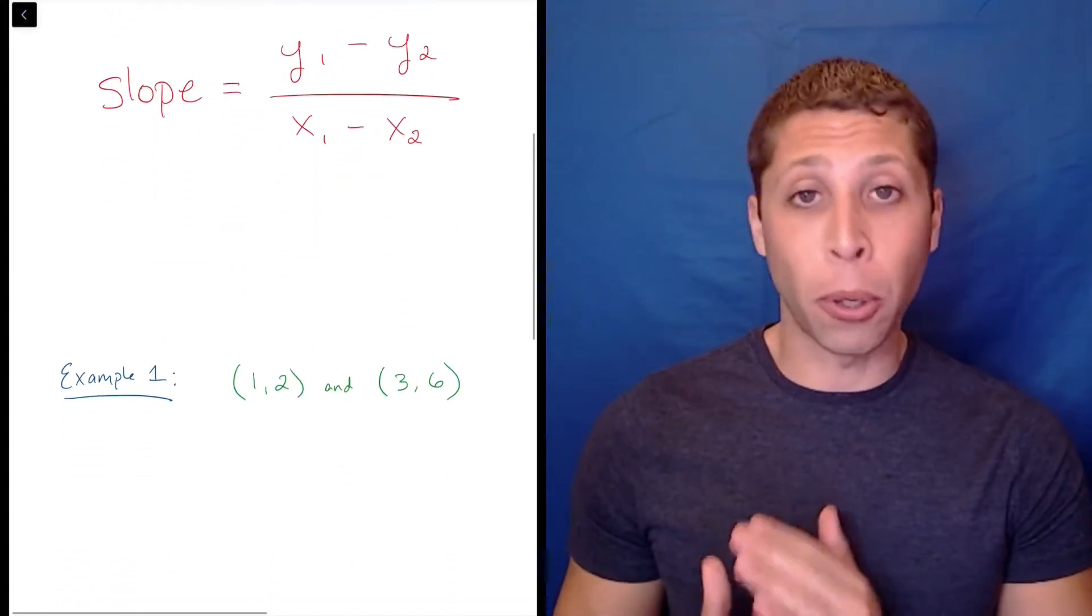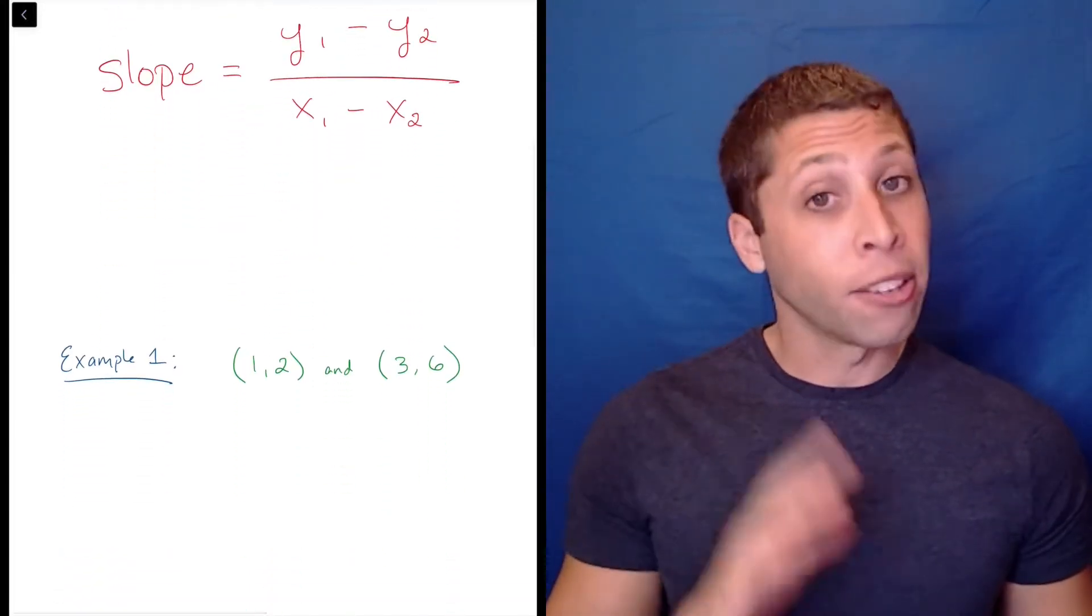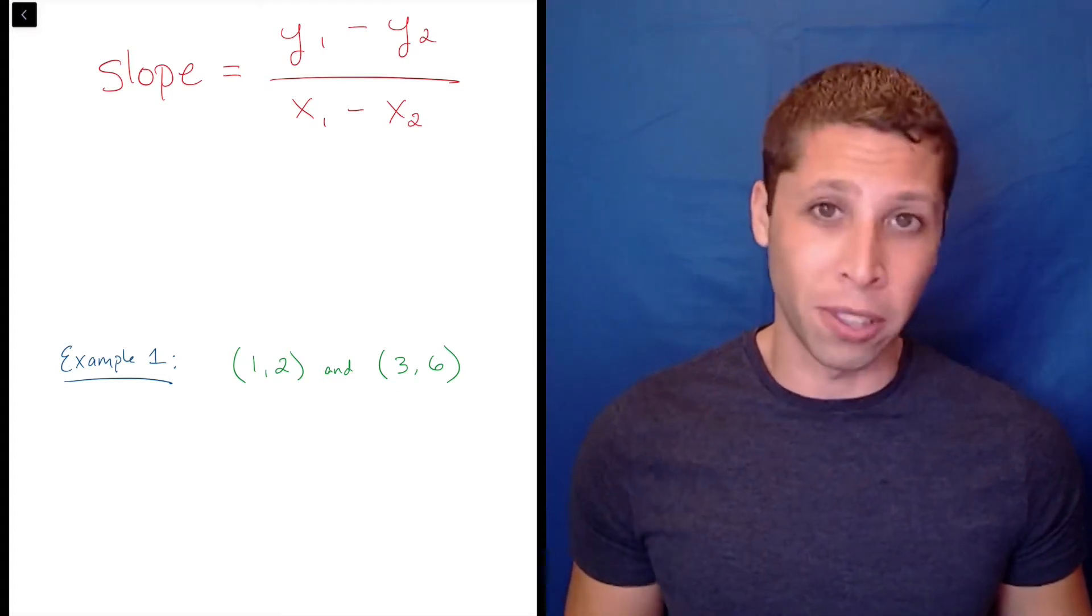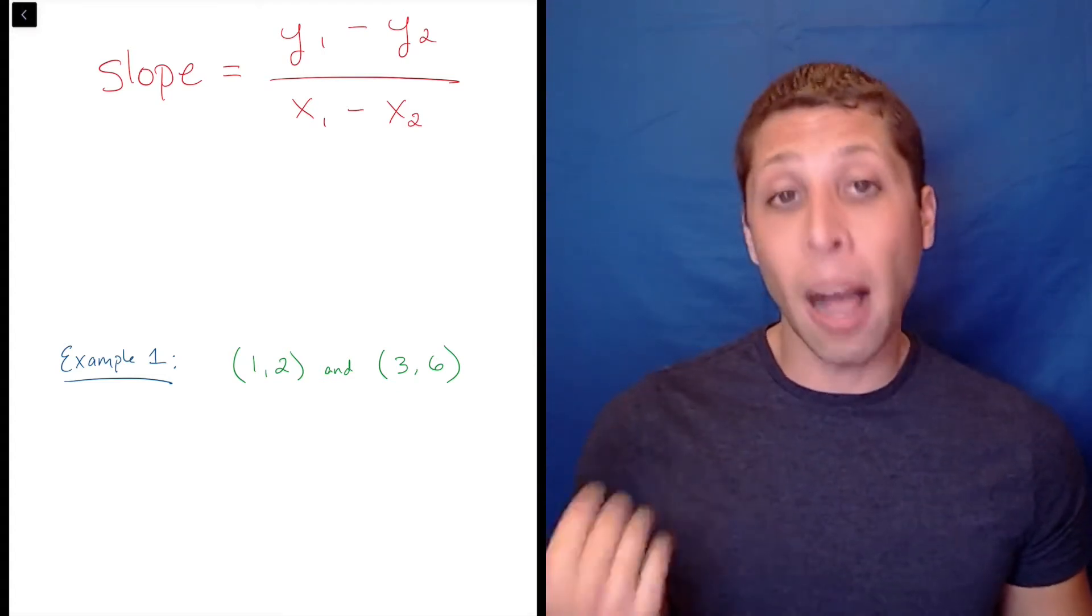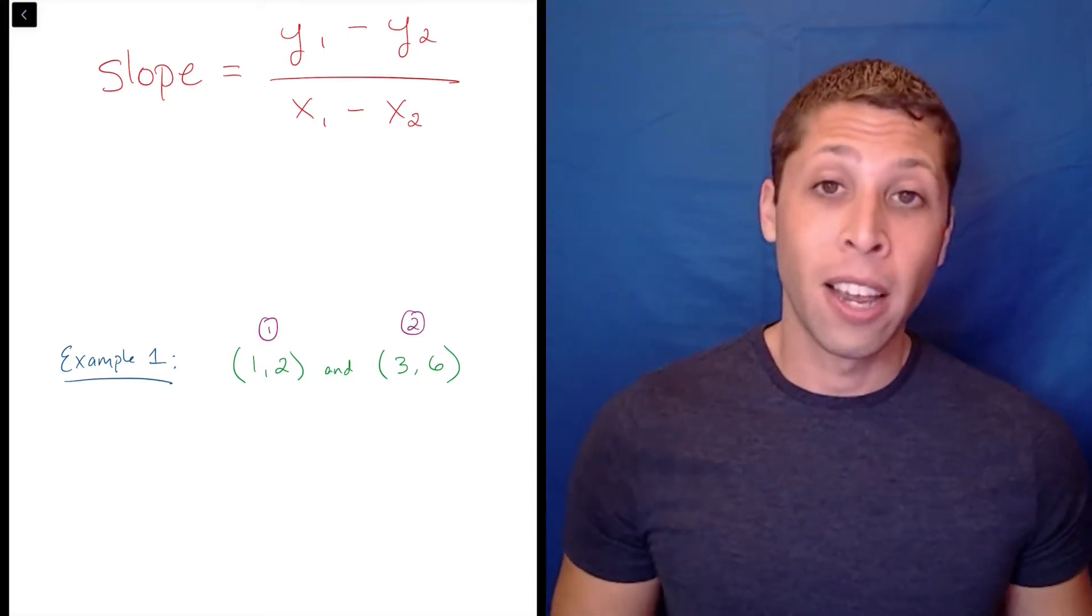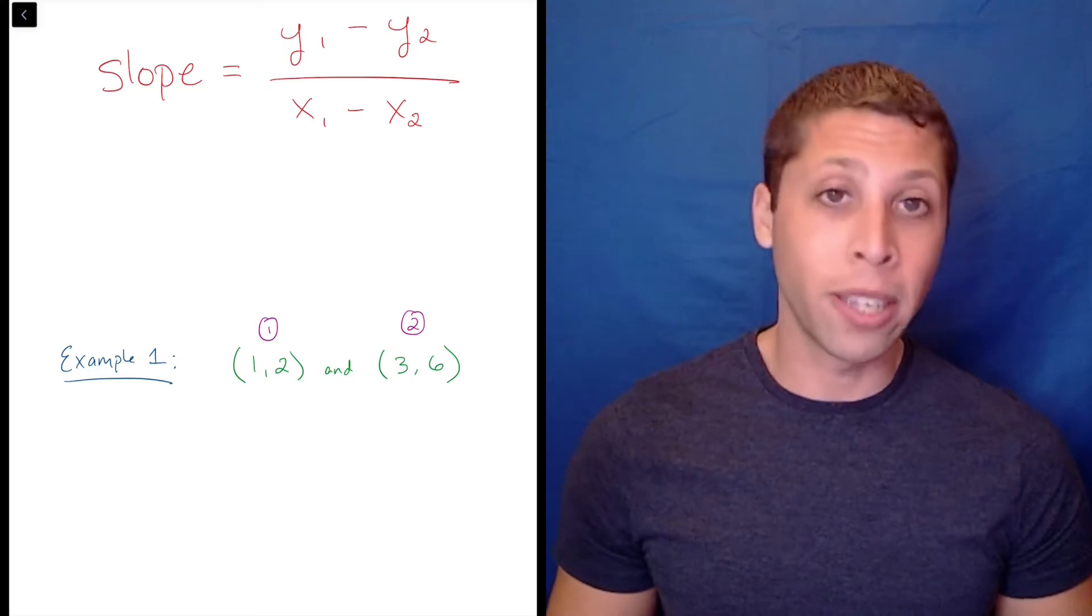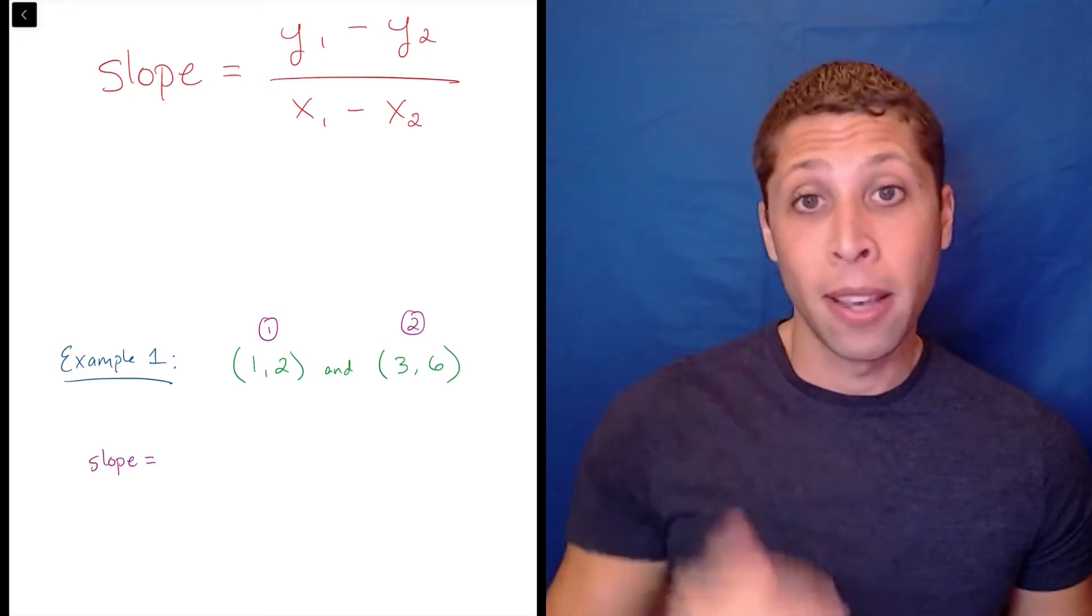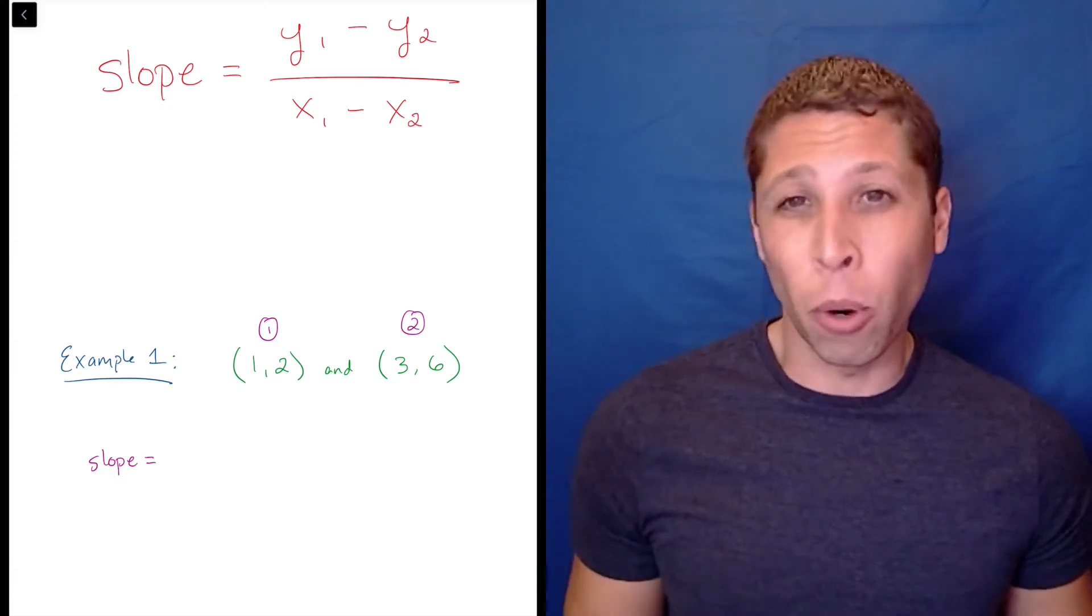Start by choosing the point that you want to go first. As long as you're consistent, it really doesn't matter which point you choose, so don't stress over this step. In this case, I'm going to keep things simple and just make the first point the first point. Our second step is to plug the coordinates into the formula. Just make sure that the y's are on top. That might seem backwards to you, but it's just how slope works.